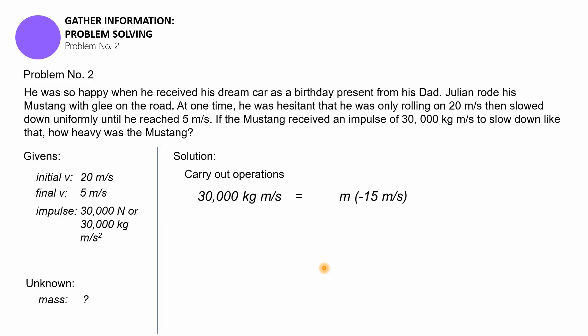We all know it's going to be a negative number - it's negative 15 meters per second. Then we're going to divide both sides by negative 15, so we'll cancel that out and get negative 2,000 kilograms, or 2,000 kilograms since we don't have negative weight or negative mass.